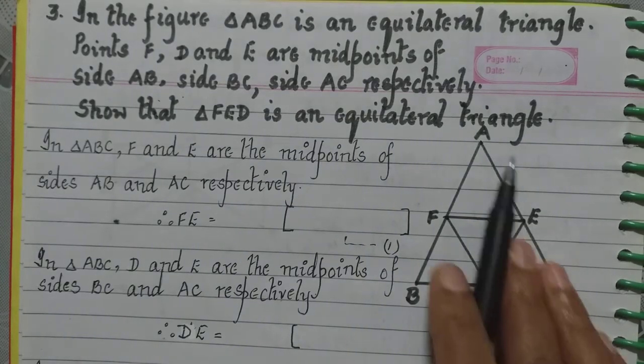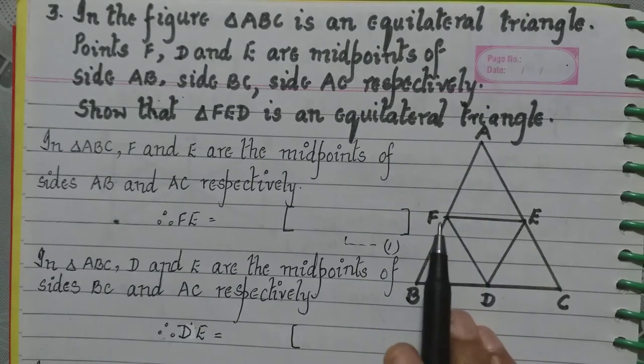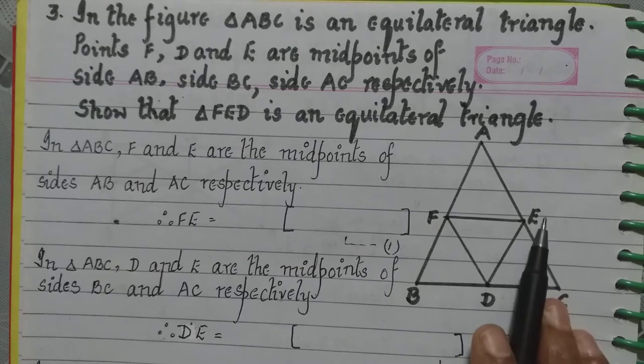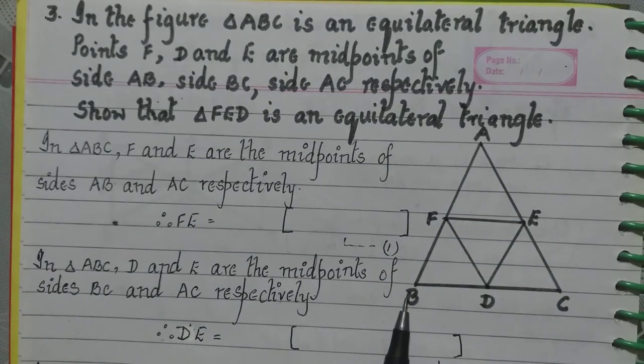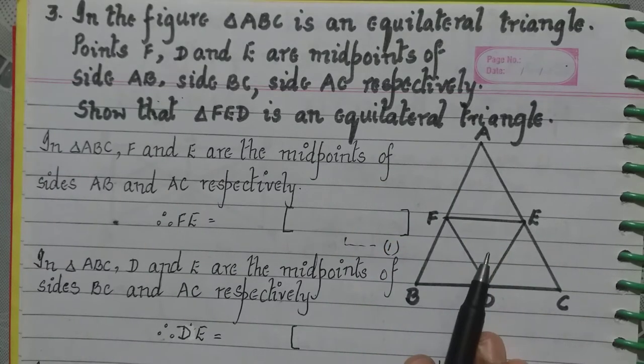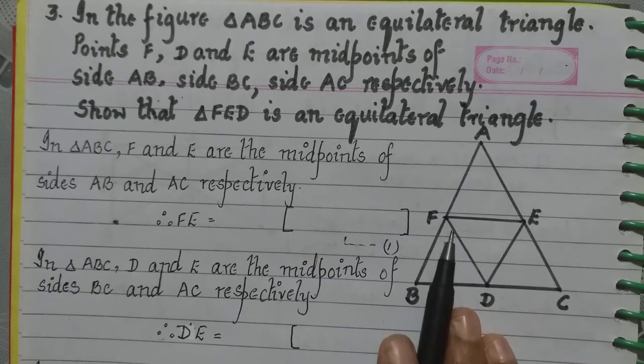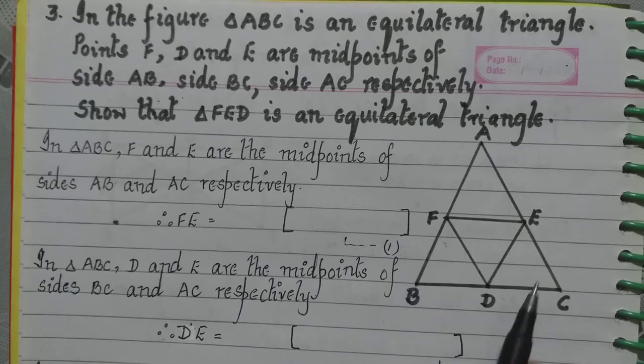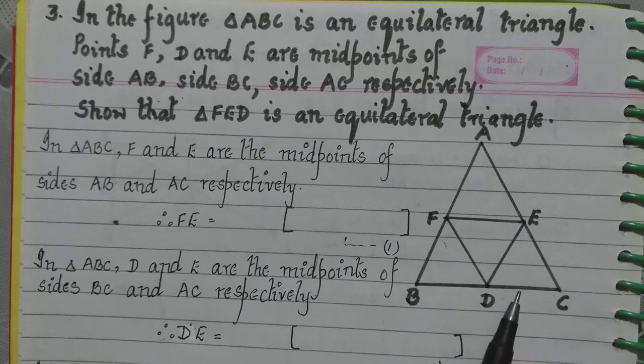Show that triangle FED is an equilateral triangle. So they have given us an equilateral triangle, and they are saying that these points F, D and E are the midpoints of the side AB, side BC and AC respectively. What are we to show? That triangle FED is an equilateral triangle.